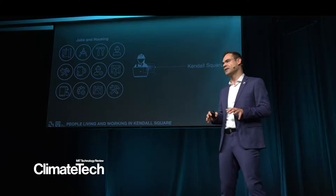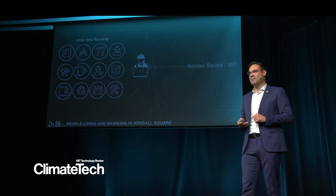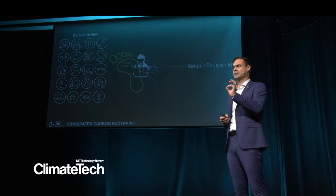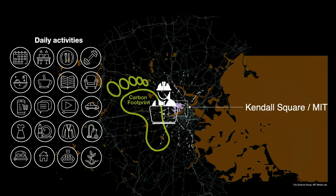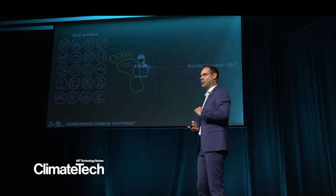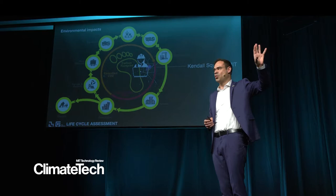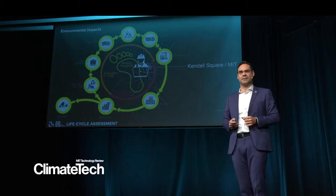That's the reason why we started in the City Science Group to research the environmental impact of people living and working in Kendall Square. We were looking into this with the lens of the consumer carbon footprint — trying to understand how our daily behavior is producing CO2 and attaching that to each person living and working in Kendall Square. Each person has a different carbon footprint, and we use lifecycle assessment methodologies to have a normalized indicator.